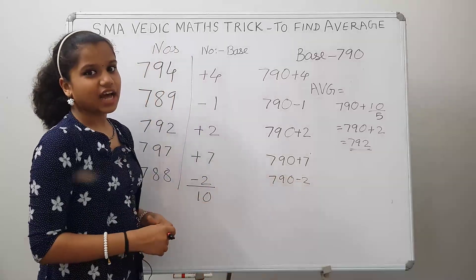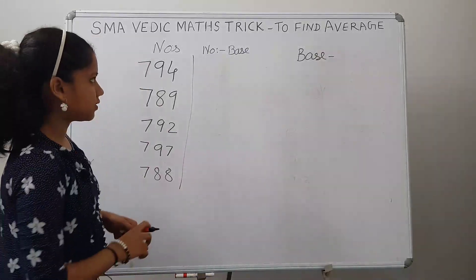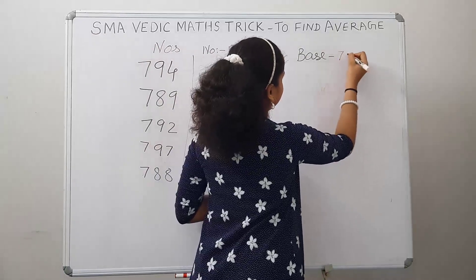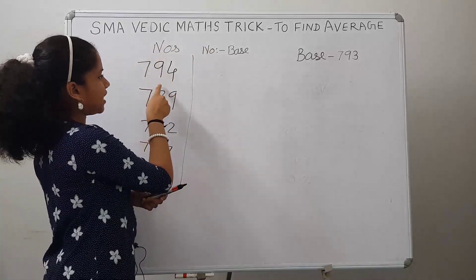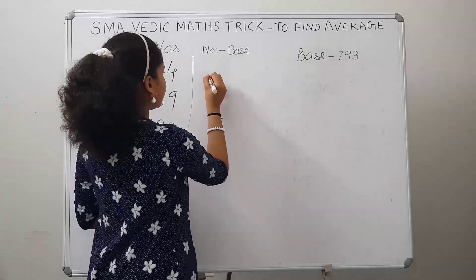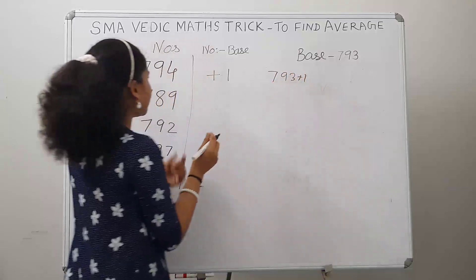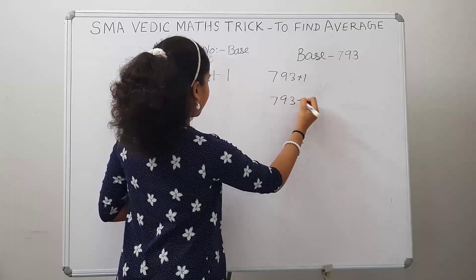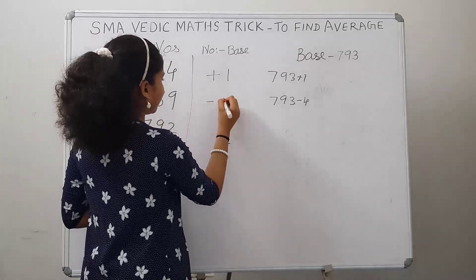This is easy, right? Now let's take the same question but with a different base. Let's take the base as 793. We have to find the difference of each number and the base. So 794 minus 793 is plus 1. 789 minus 793 is minus 4, so write minus 4. And 793 minus 1 gives us 792, so write minus 1.